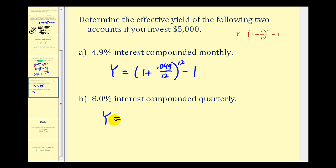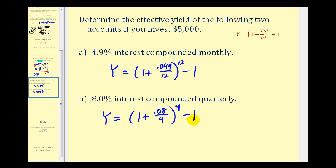For the second example: Y = (1 + 0.08/4)^4 − 1, since it is compounded quarterly — there are four quarters in one year, so N equals 4.